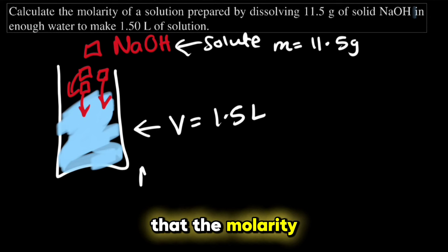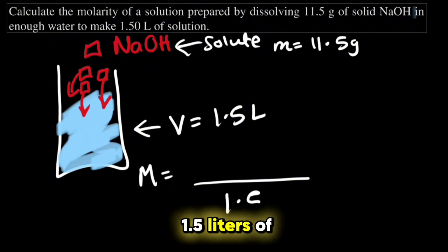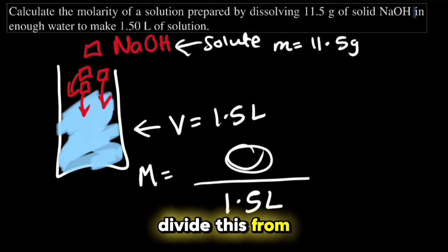Now as we saw previously, the molarity equals the moles of the solute divided by the liters of the solution. It means that we will take 1.5 liters of solution and put it here in the denominator, and then we will divide this by the moles.